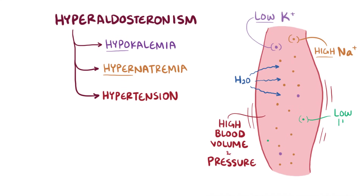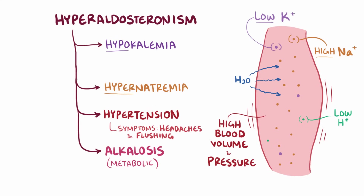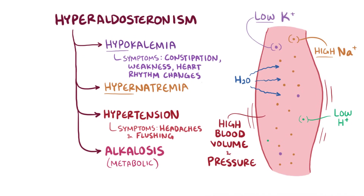Finally, the loss of protons also results in an alkalosis, and more specifically a metabolic alkalosis, since it's caused by the kidneys. Individuals with hyperaldosteronism typically develop hypertension-related symptoms like headaches and facial flushing, as well as hypokalemia-related symptoms like constipation, weakness, and potentially changes in their heart rhythm.